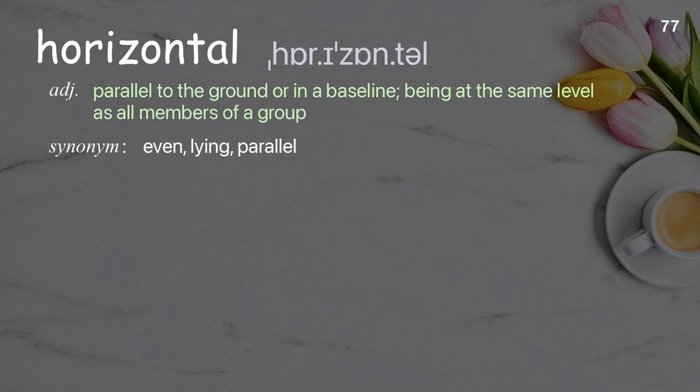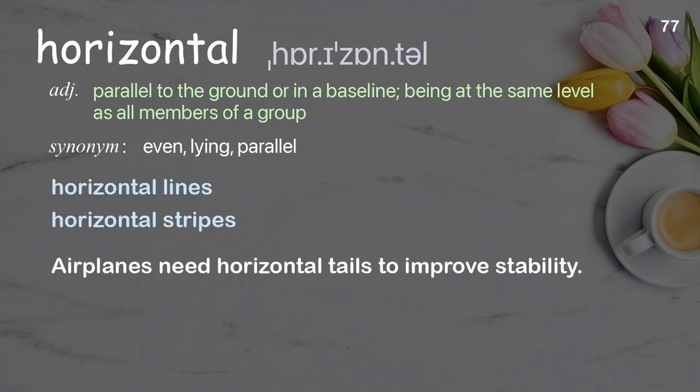Horizontal: Parallel to the ground or in a baseline; being at the same level as all members of a group. Examples: Horizontal lines. Horizontal stripes. Airplanes need horizontal tails to improve stability.